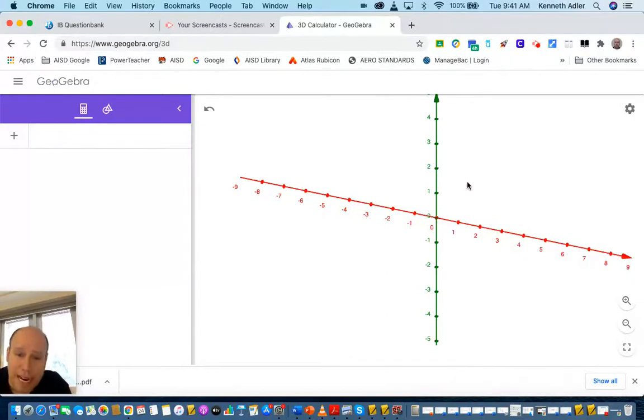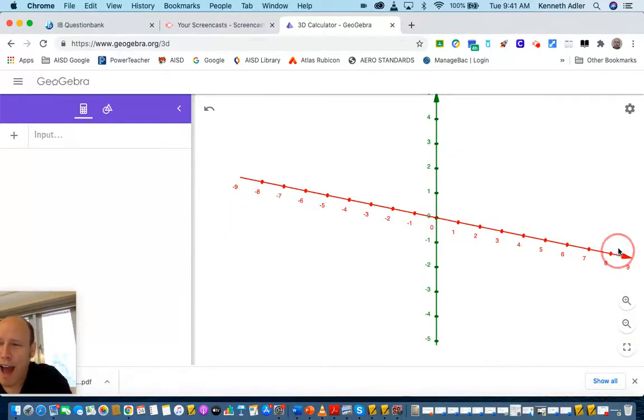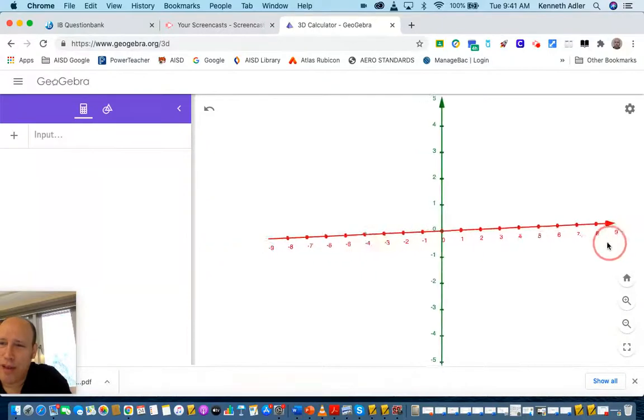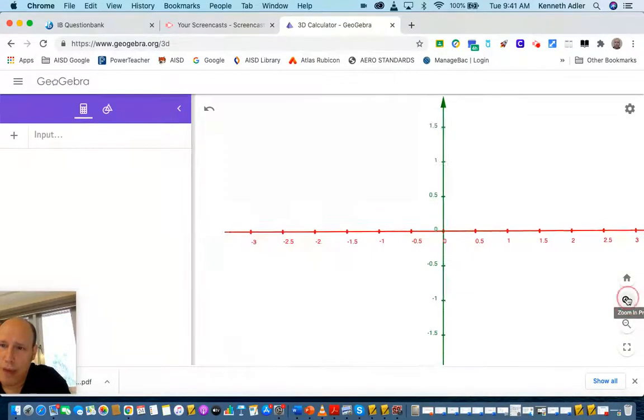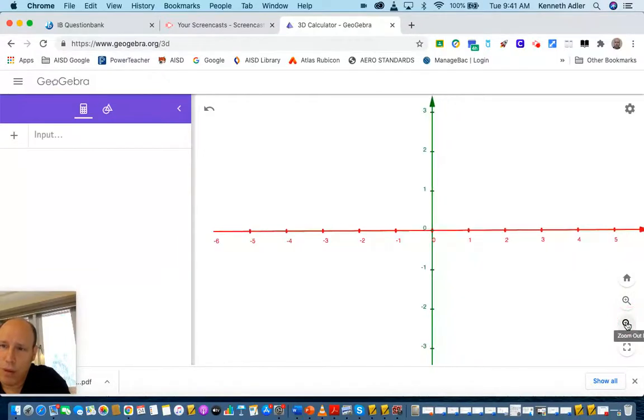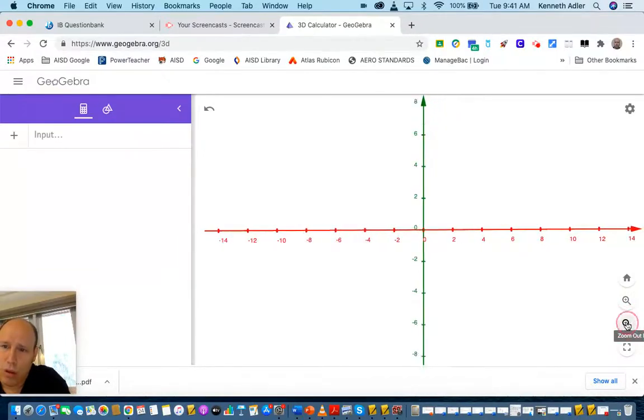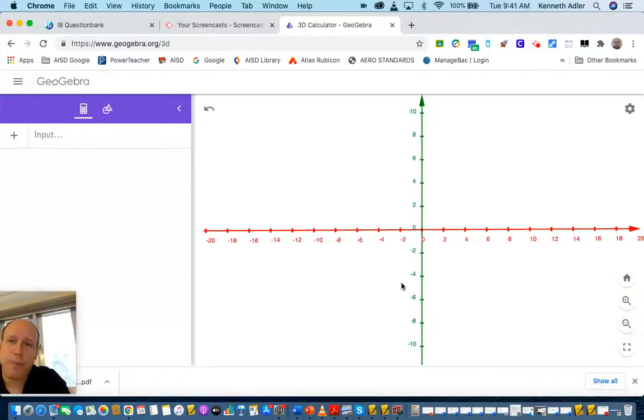Now the green is vertical. Remember that, the green is y. Move it around. I'm not good at this for some reason. We're going to zoom out a little bit. Let's go to the input and let's put our functions in.